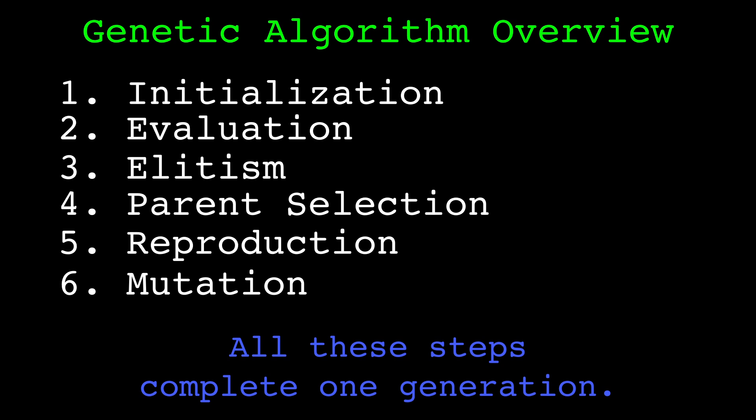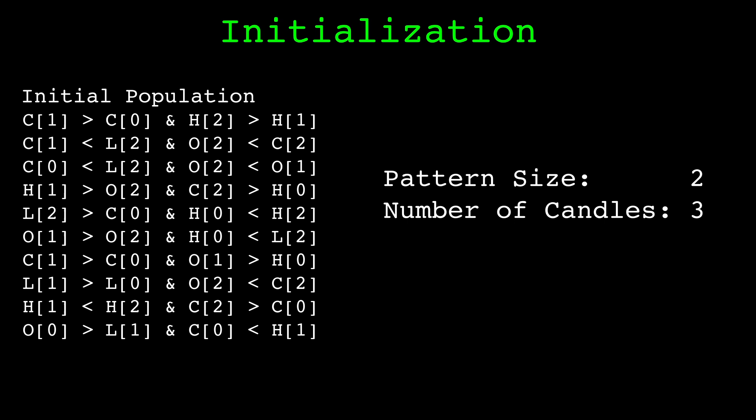The first step of a genetic algorithm is initialization. We set our hyperparameters and generate several random patterns to build our initial population. Now we move on to the evaluation step.